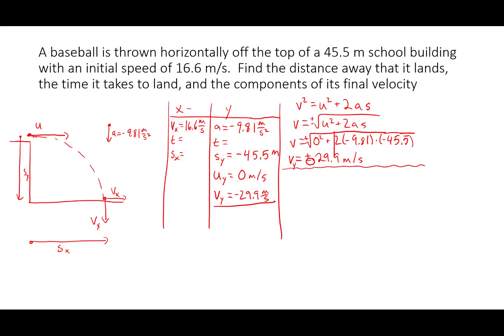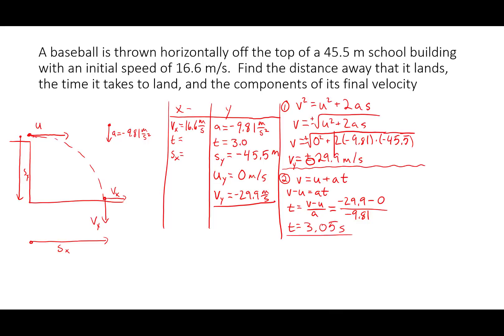We still can't do anything with x — we need to find t. We know the initial velocity, the final velocity, and the acceleration, so I'm going to use v equals u plus at in the y direction. Solving for t: t equals v minus u over a. Plugging in: t equals negative 29.9 minus 0 over negative 9.81. That gives t equals 3.05 seconds. Since we know the time in the y direction, we also know the time in the x direction — 3.05 seconds.